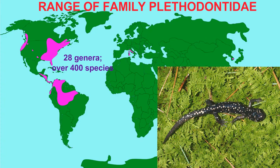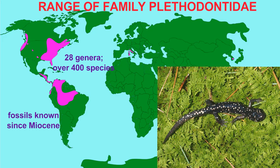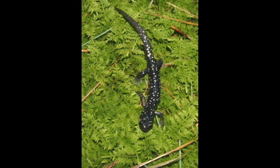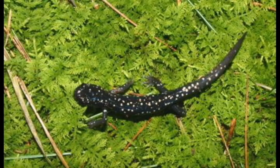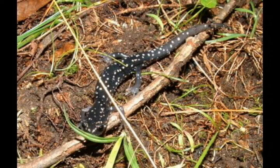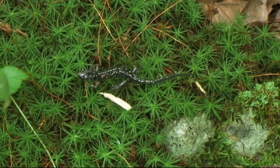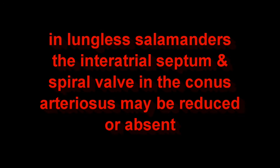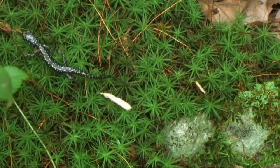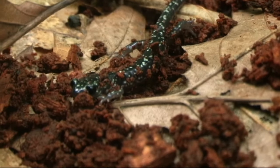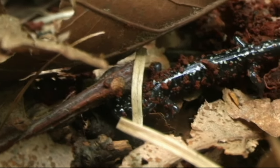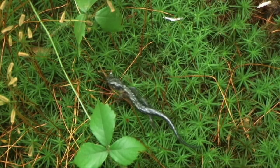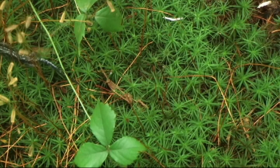the family Plethodontidae, the most diverse family in the northeast United States, is composed of lungless salamanders. As adults, all of their gas exchange is performed through cutaneous respiration in their skin. This lungless condition has led to a few other changes from more typical salamander circulation — for example, the interatrial septum dividing the two atria may be reduced or even absent, and the spiral valve of the conus arteriosus, which largely separates oxygenated and deoxygenated blood, may also be reduced or absent.